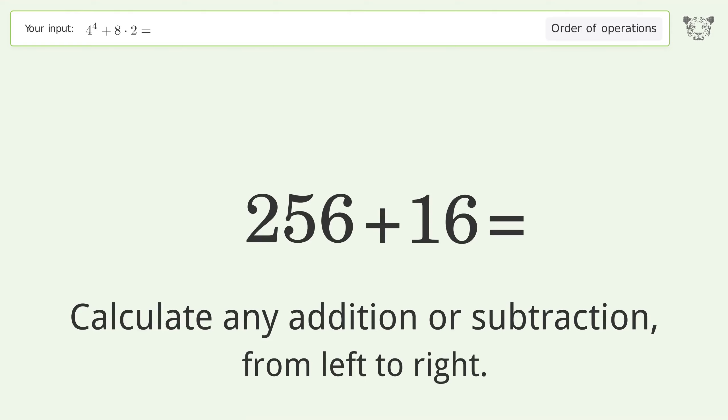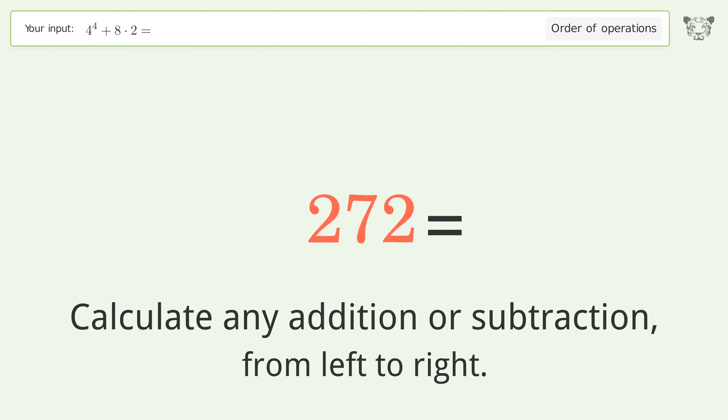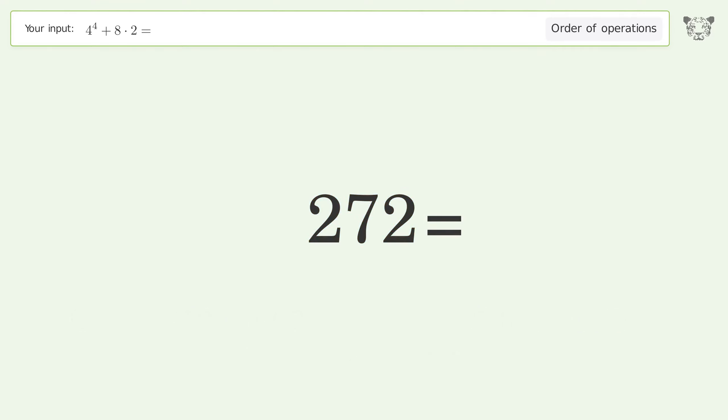Calculate any addition or subtraction from left to right: 256 plus 16 equals 272. And so the final result is 272.